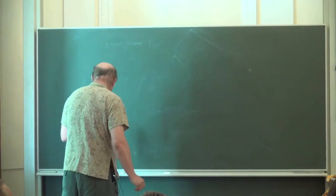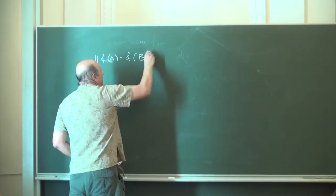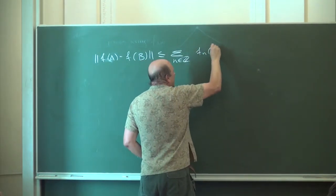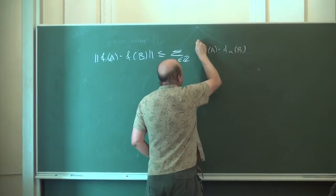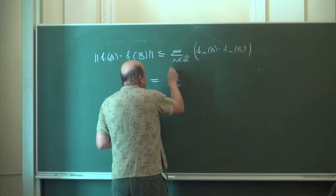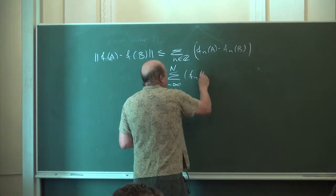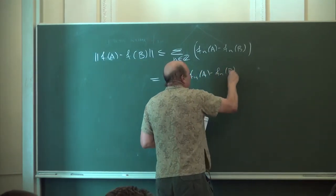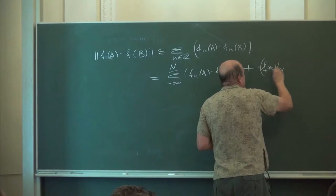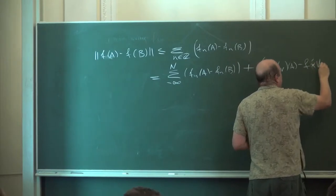Then we have the following. The norm of f(A) minus f(B) is less than or equal to the sum over all integers of the norm of F_n(A) minus F_n(B). And we can also write it as the sum from minus infinity to N of ||F_n(A) - F_n(B)||, plus the sum from N+1 to infinity of ||f*V_n(A) - f*V_n(B)||.